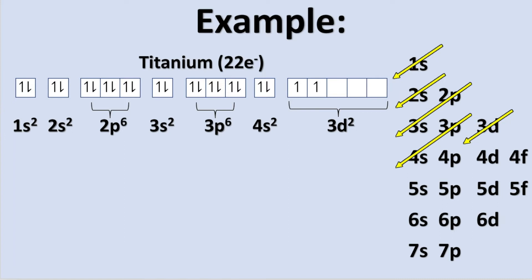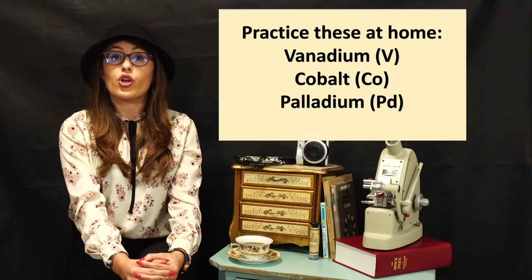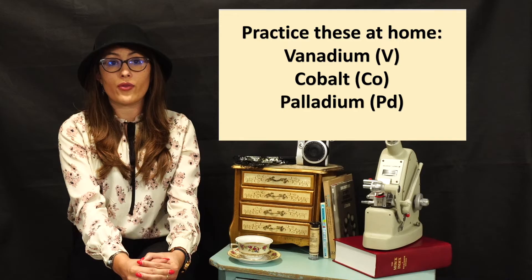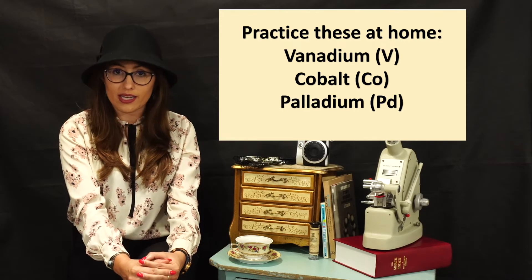So our final electron configuration for titanium will be 1s2, 2s2, 2p6, 3s2, 3p6, 4s2, 3d2. It will take practice to get the hang of this, and that's why I highly suggest when you begin to write out your electron configurations, you always write this diagram and follow it. Go ahead and try to write out the configurations for vanadium, cobalt, and palladium.